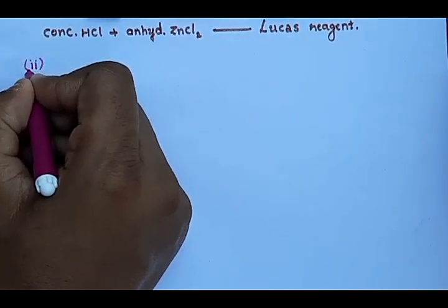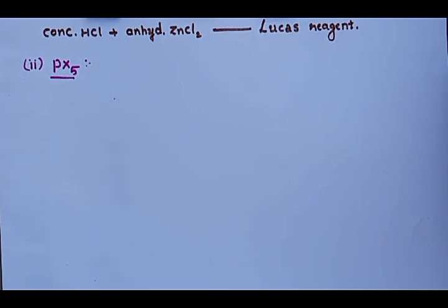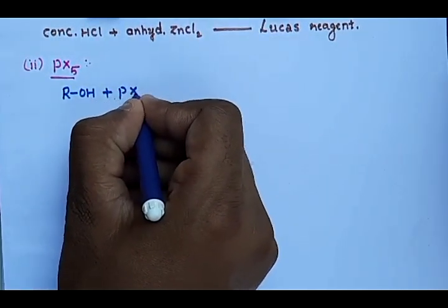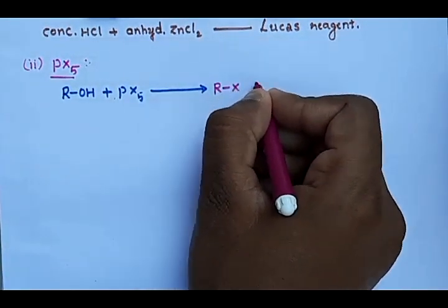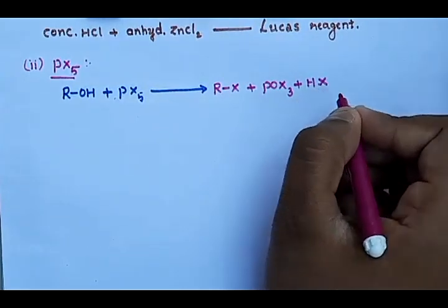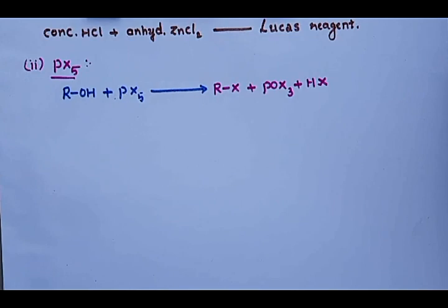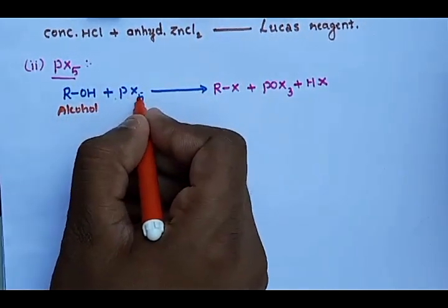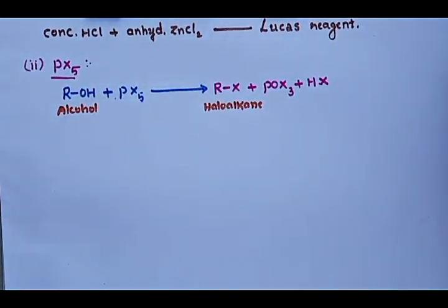The second method is from phosphorus halide — specifically phosphorus pentahalide. When alcohol is treated with phosphorus pentahalide (PX₅), it gives a product: RX plus POX₃ plus HX. Alcohol is converted into a haloalkane using PX₅.